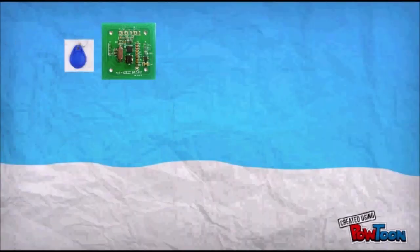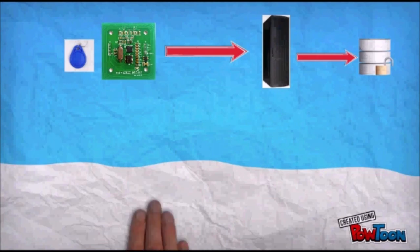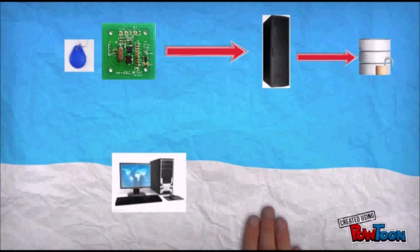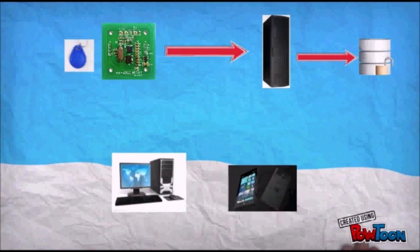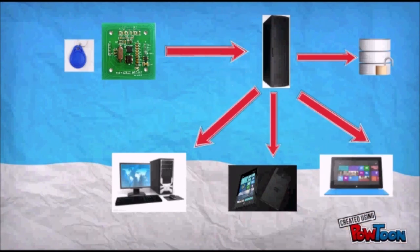After a student enters or leaves the classroom by scanning their RFID card, the attendance information will be stored in a database through the server. Lecturers and students can view the attendance situation and movement through a web page system, smartphone system, and tablet system. Besides that, they can also track attendance history through these three systems.